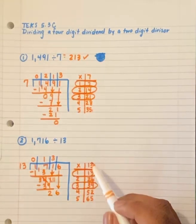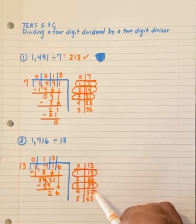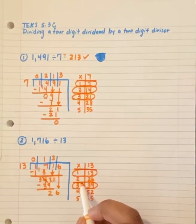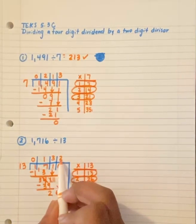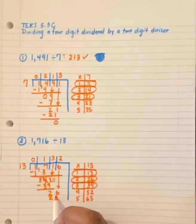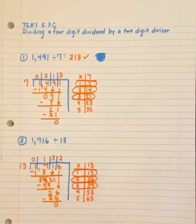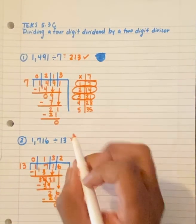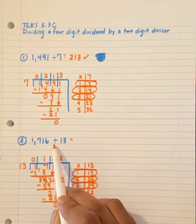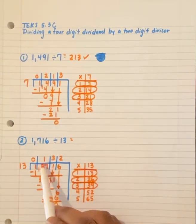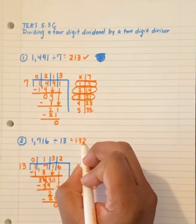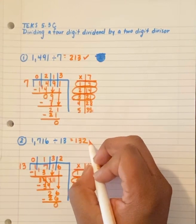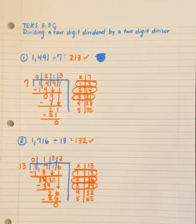Can I get to 26? I sure can, right here. My 2 goes here. My 26 goes below the other 26. And we subtract, and now we have 0. That means that 1,716 divided by 13 equals 132. I'll see you next time.